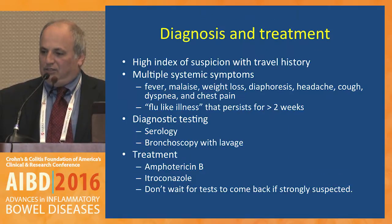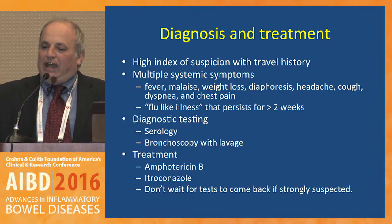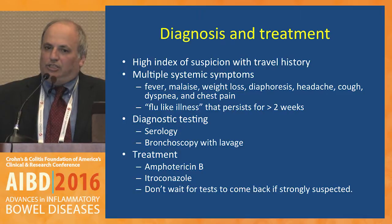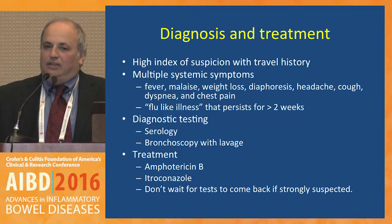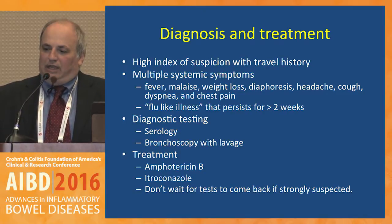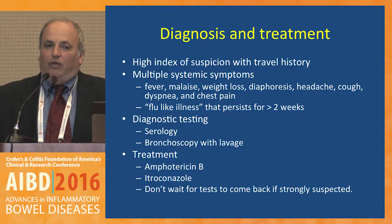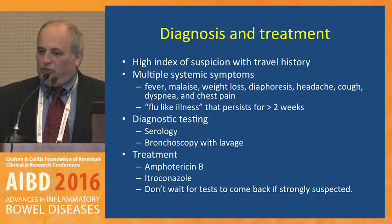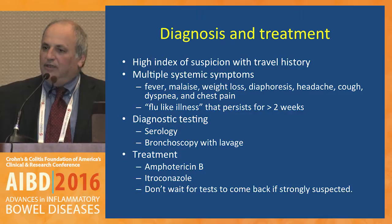Histoplasmosis can cause not only lung disease but disseminated disease involving the liver, spleen, bone marrow, adrenals, and meninges. Untreated on immunosuppression, patients can die. You need a high index of suspicion - think about those multiple systemic symptoms. Diagnosis is through serology and bronchoscopy, and treatment is with antifungals: amphotericin or itraconazole. Don't wait for test results to come back; if you strongly suspect it, treat empirically rather than risk severe disseminated disease.